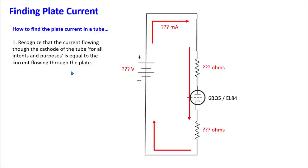The amount of plate current equals the amount of cathode current. There's a tiny bit of grid current that plays into it, but it's negligible and doesn't matter in our calculations. So for all intents and purposes, the current flowing here is the same as the current flowing into the tube. If we want to measure plate current, it's often easier to measure the cathode current.